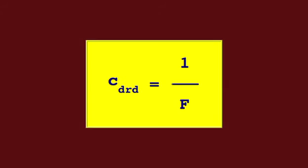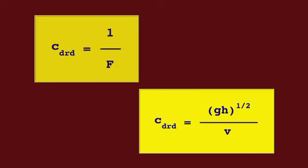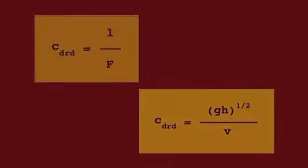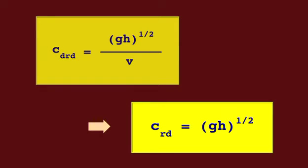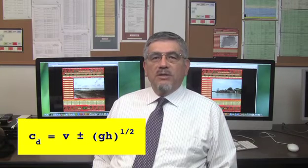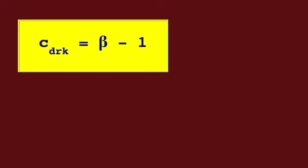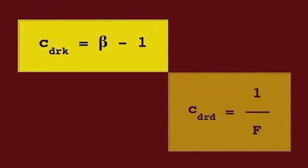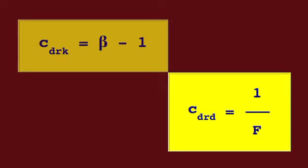The dimensionless relative dynamic wave celerity is the reciprocal of the Froude number. The relative dynamic wave celerity and the dynamic wave celerity are derived accordingly. This equation is referred to as the Lagrange celerity equation. Note that while the dimensionless relative kinematic wave celerity is a constant equal to beta minus 1, the dimensionless relative dynamic wave celerity is the reciprocal of the Froude number.